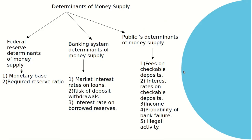Today we discuss the determinants of money supply. There are three determinants: first is Federal Reserve determinants — monetary base and required reserve ratio. Monetary base is also known as high powered money; high powered money is currency in hand plus commercial bank reserves. Required reserve ratio is also known as cash reserve ratio. Second is banking system determinants — market interest rates on loan, risk of deposit withdrawals, and interest rate on borrowed reserves. Third is public determinants — fees on checkable deposits, interest rates on checkable deposits, income, probability of bank failure, and illegal activity.